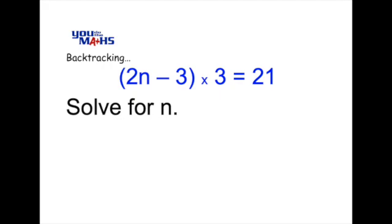Okay, let's have a look at the process of backtracking and we do it by looking at the letter n first of all and asking yourself what's happened to the letter n. So if we break it down part by part, we can see that initially the n is multiplied by 2.